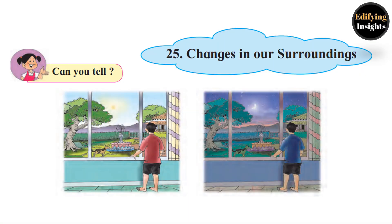Subject EVS, chapter number 25: Changes in Our Surroundings. In the previous lesson we learned that due to changes in weather conditions, the type of clothes we wear also changes — we wear clothes according to the seasons or climatic conditions. In this lesson we are going to learn about the changes in our surroundings.